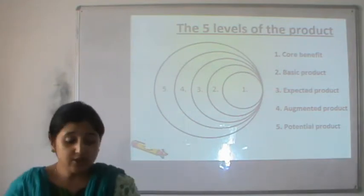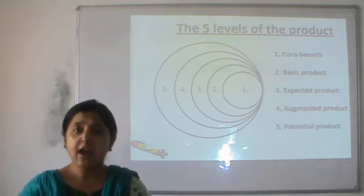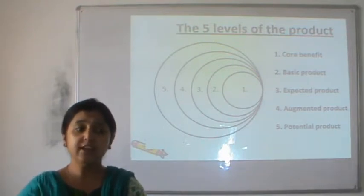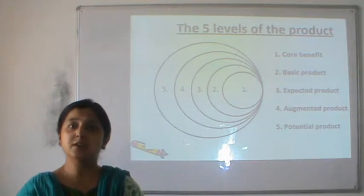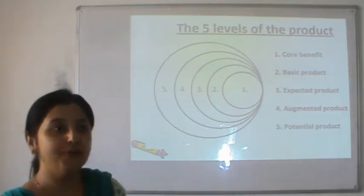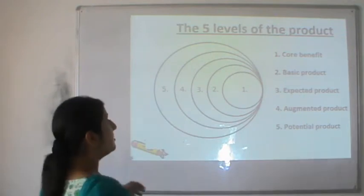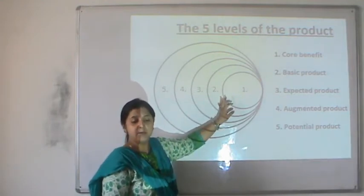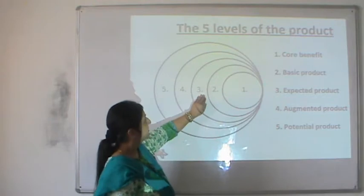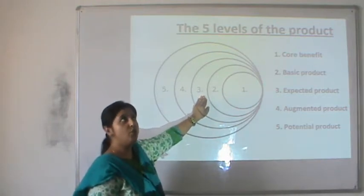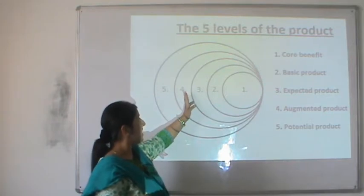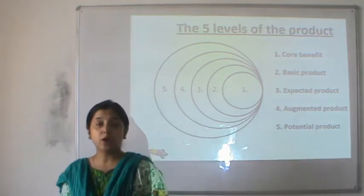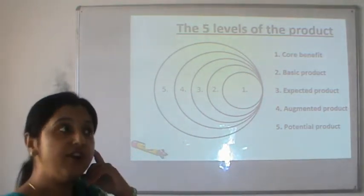The potential product is level five — a consumer's expectations from the product of the future. Imagine a stay where you are not disturbed by room service and robots come in to serve you — that would be a potential product. So: basic facilities come at the core, minimum satisfaction is the basic product, pinpointed satisfaction to specific needs is the augmented product, and the company constantly striving to come up with innovative products for the future is the potential product.